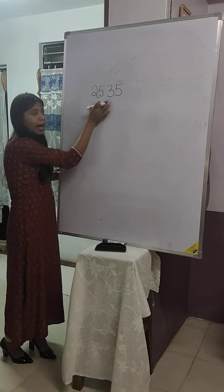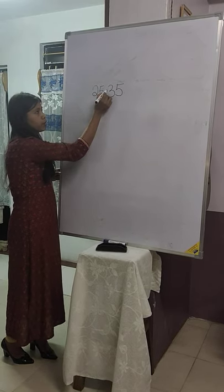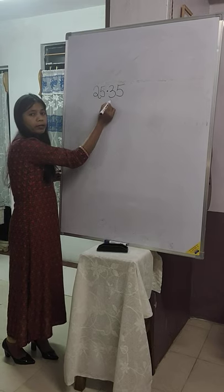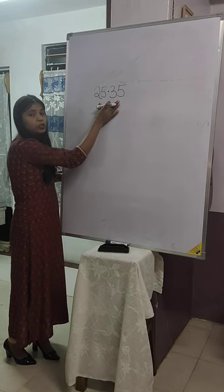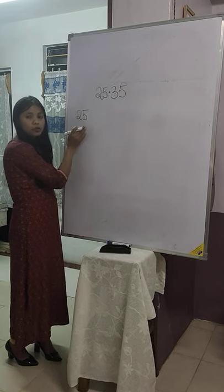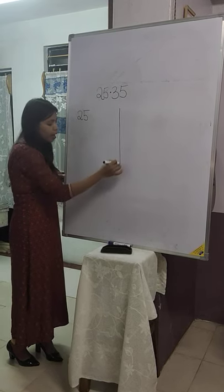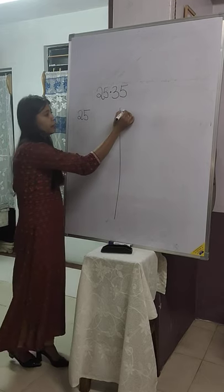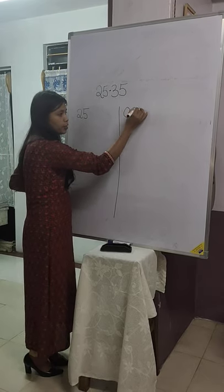Let's take an example, say 25.35. So this number has a decimal point. We will divide this into two parts. First is the decimal part 25 and the other part will divide it as 0.35.